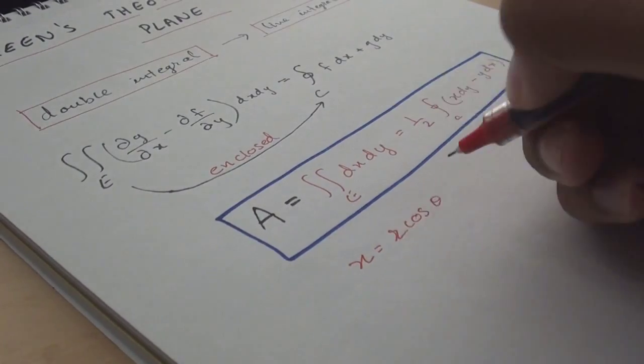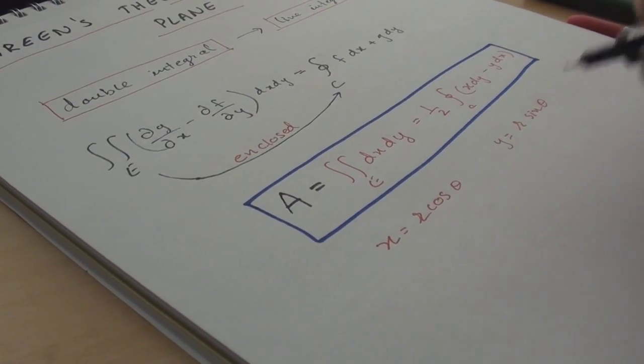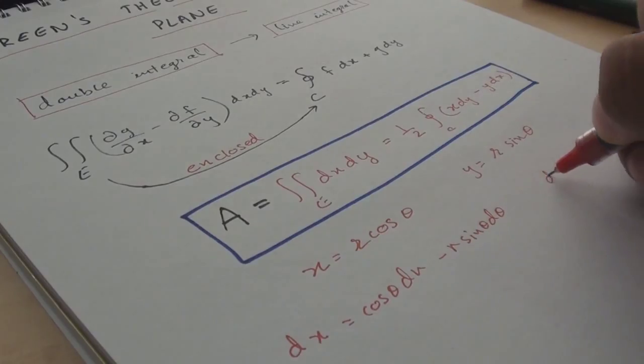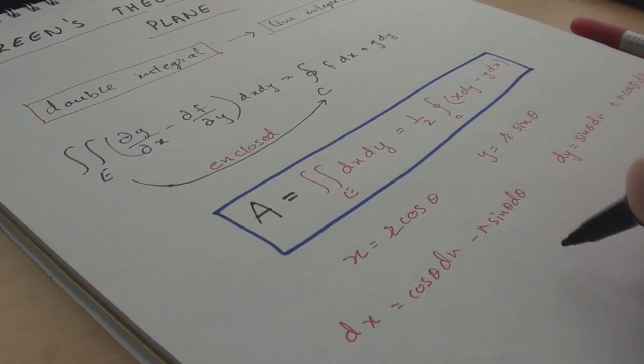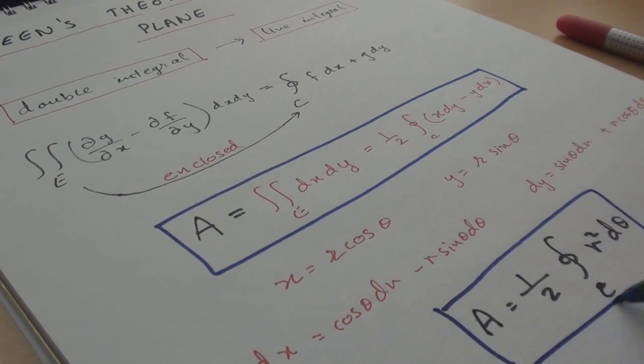And in terms of polar coordinates for x equals r cos θ and y equals r sin θ, we have dx equals cos θ dr minus r sin θ dθ and dy equals sin θ dr plus r cos θ which makes the area equal to 1/2 times the closed line integral of r² dθ.